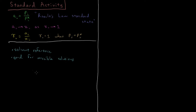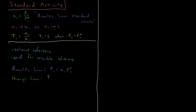To remind ourselves: Raoult's Law says that the vapor pressure of a given component is equal to its mole fraction times the vapor pressure of its pure liquid. In contrast to that, we could also try to base the standard state on Henry's Law, which says that the vapor pressure of a component of a solution is equal to its mole fraction times a constant called the Henry's Law constant K. And this is true at low mole fractions.